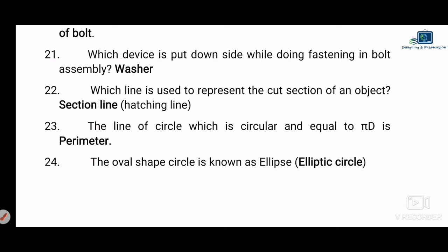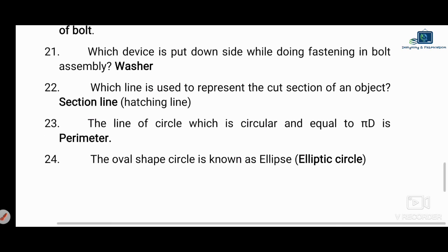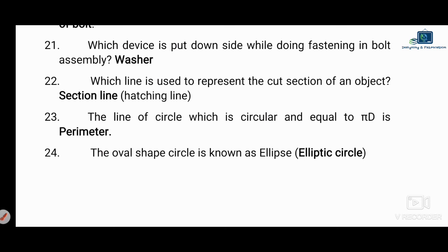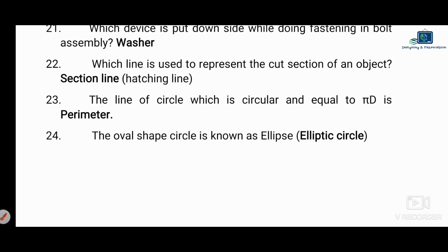Next question: which device is put in while doing fastening in a bolt assembly? In a bolt assembly, a washer is used. The washer is placed to tighten the wall — the correct answer is washer.